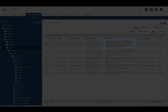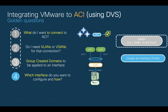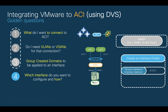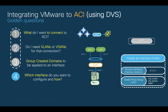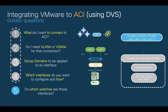Let's go back to our golden questions. The next one is, which interface do you want to configure and how? Remember, we will need to create an interface profile for this. Specify the interfaces to use and the type of interface you will need, like VPC in this case, as well as any specific policy you want to apply to that interface, such as CDP, LACP, etc. The most important part is to include the AEP you created in step 3 as part of the policy group. Once that is done, we will just choose the switches where we want to connect the server on by creating a switch profile and associate the interface profile to it.